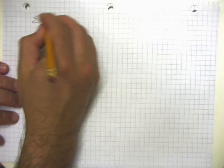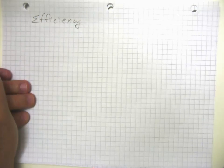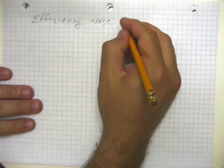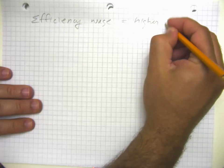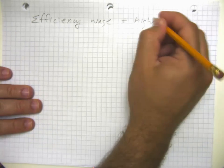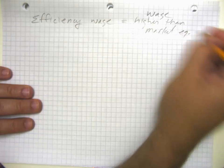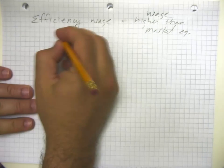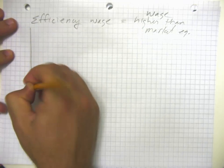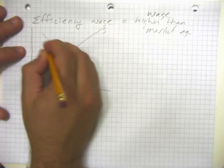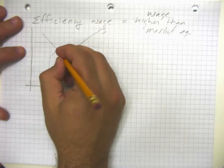Before I finish up, notice that the efficiency wage sounds pretty awesome in some ways from the point of view of the workers, right? Efficiency wage means we get a higher wage than the market equilibrium. And that is good, at least for workers. But notice that as we depart from the market equilibrium, we are going to have both some unemployment and we're going to have some deadweight loss here.